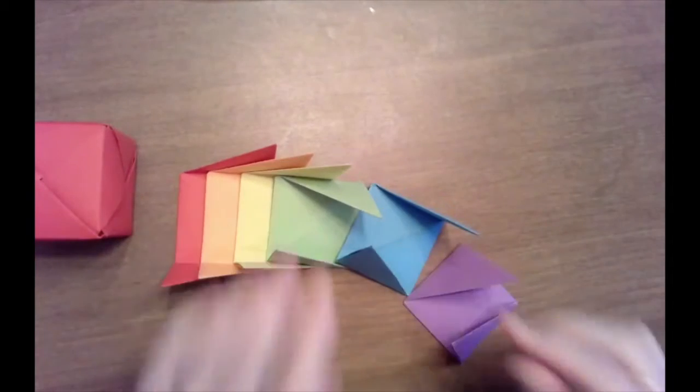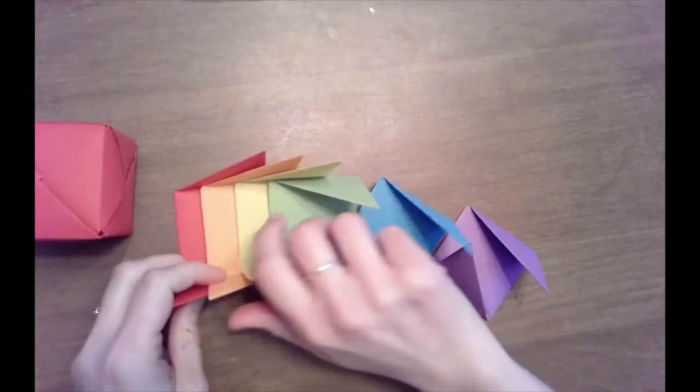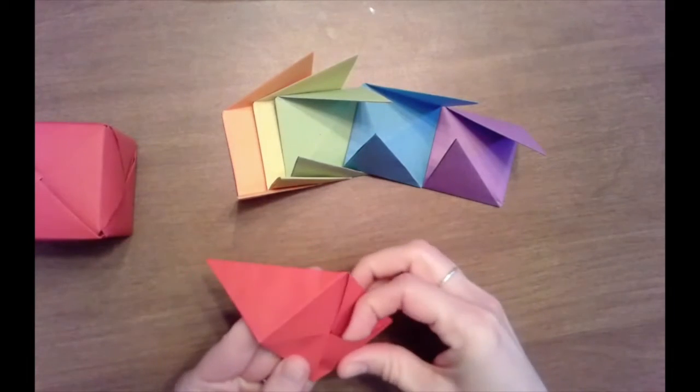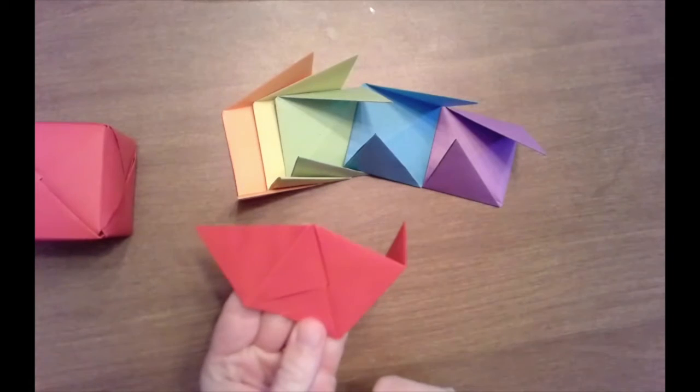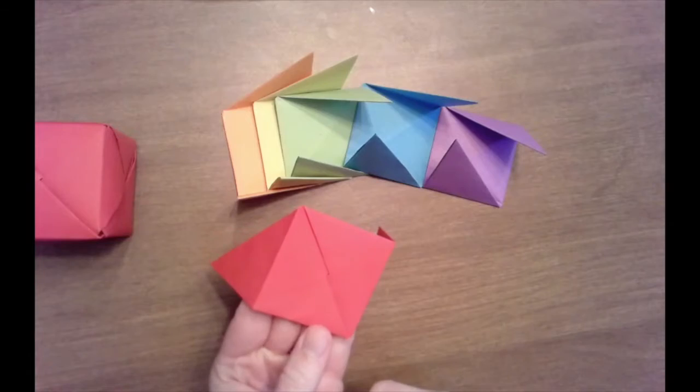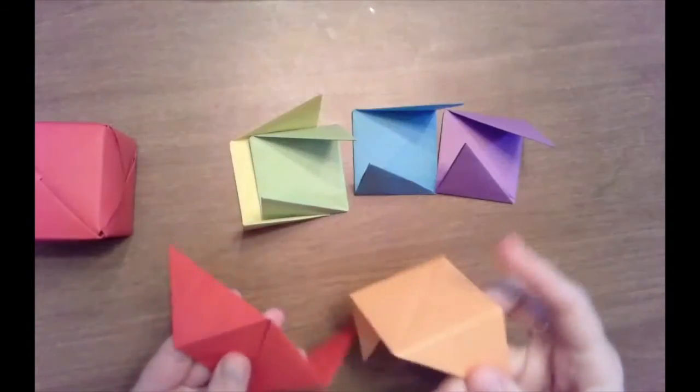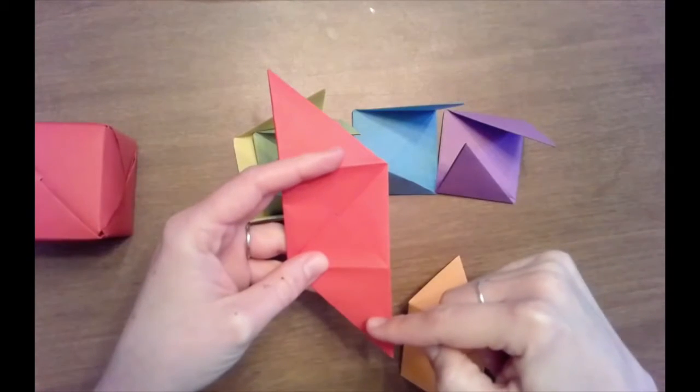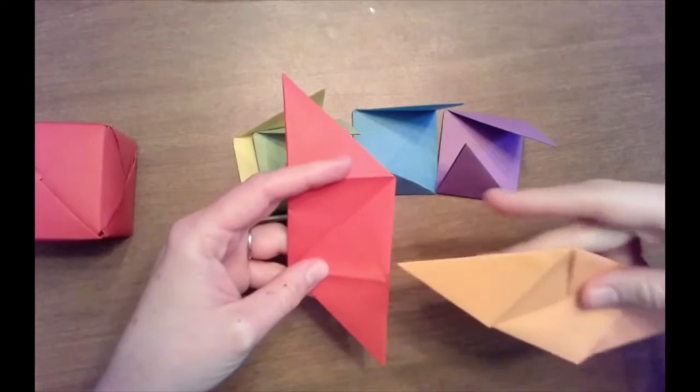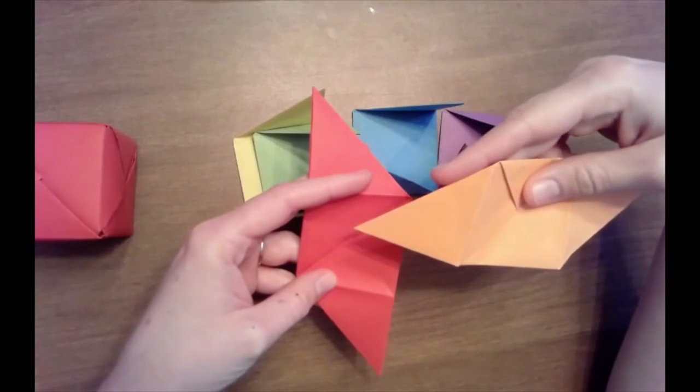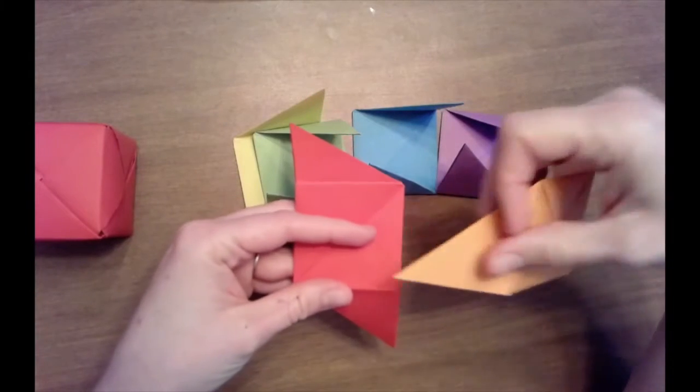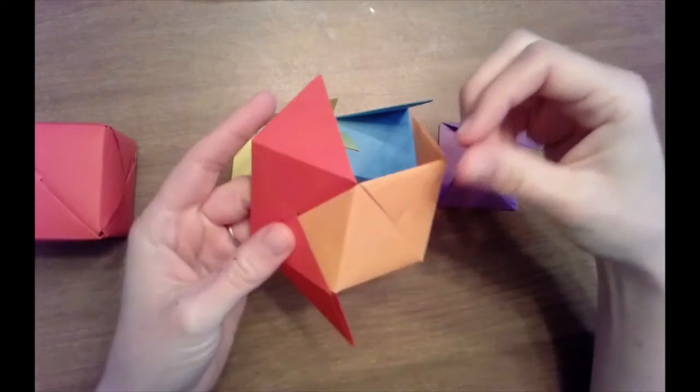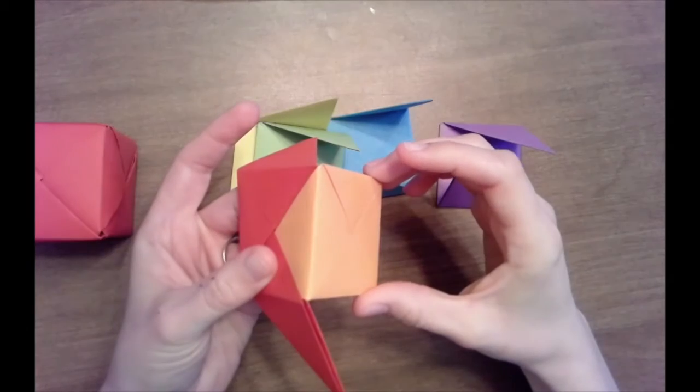Great job creating your six Sonob units. Now it's time to put them together to create a cube. Set aside five and pick up your first one. On the front part that is a square you'll notice there are two pockets. You're going to slide the pieces together using those pockets. So pick up the first one and make sure it's pointing up and down. Pick up the second one and make sure it's going side to side. Slide in the triangle into the pocket. Now you'll notice we've created a corner of the cube.